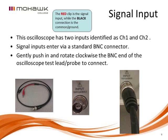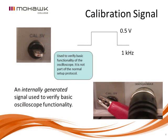The oscilloscope inputs come in through a pair of oscilloscope leads. The one shown is different than the one in your kit — your kit's is much better quality — but they basically do the same thing. Each channel on a two-channel scope will have a set of oscilloscope leads to bring the signal into the oscilloscope for processing.